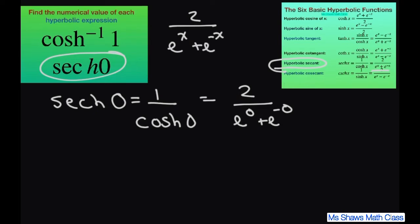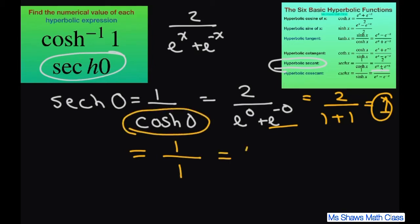Alright, so e to the 0 power is 1, and we have it again, so 1. So 2 divided by 2 is 1. So when you want to do your hyperbolic cosine, you're going to get 1 divided by hyperbolic cosine of 0 is 1. So that gives you 1.